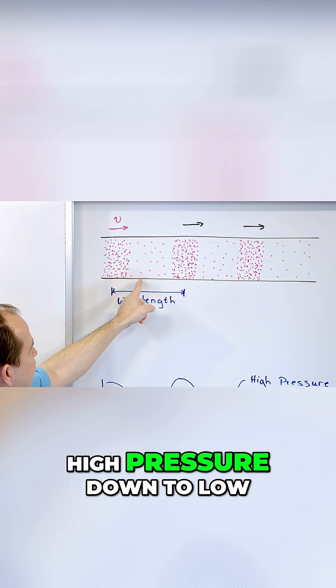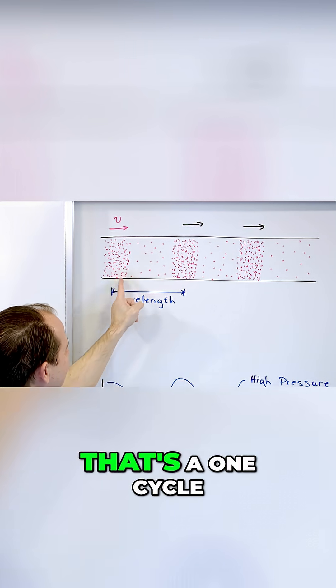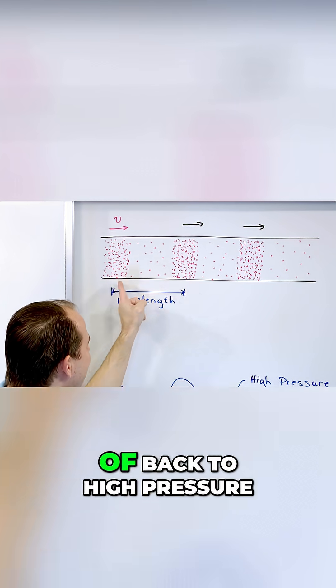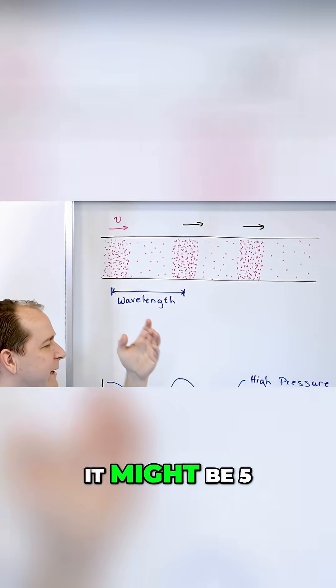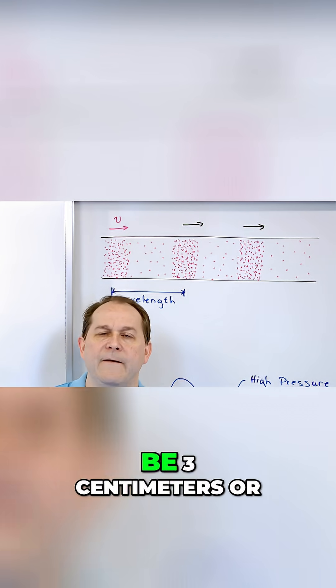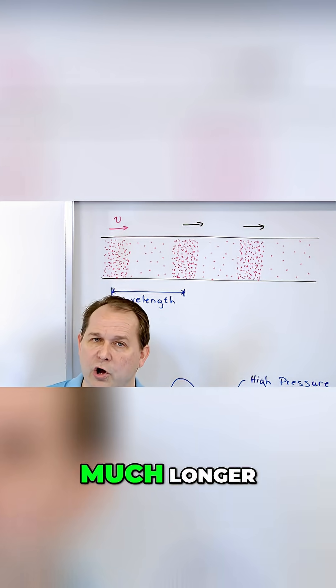So we're going from high pressure down to low back to high. That's one cycle, back to high pressure. That's called the wavelength. It might be five centimeters or it might be three centimeters or it might be something much longer.